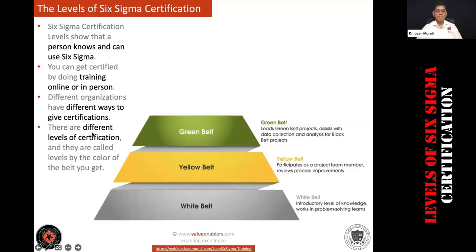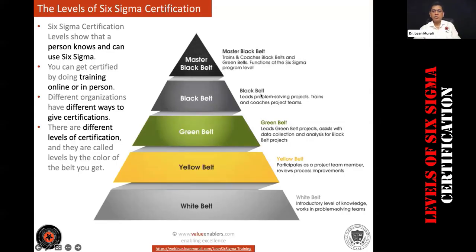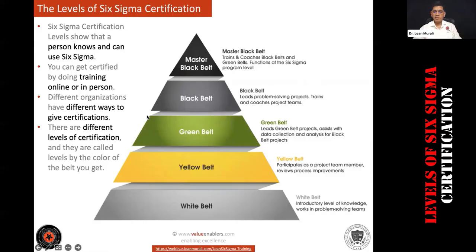At Green Belt level, you can lead some projects, assist in data collection and analysis, and help Black Belts analyze things. Black Belt actually leads problem-solving projects, trains and coaches project teams. Above that is Master Black Belt, which is the highest level.